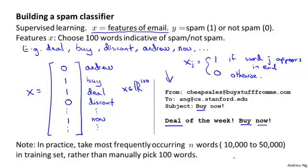By the way, even though I described this as manually picking a hundred words, in practice what's most commonly done is to look through the training set and pick the most frequently occurring n words, where n is usually between 10,000 and 50,000, and use those as your features. So rather than manually picking a hundred words, you look through the training examples and pick the most frequently occurring 10,000 to 50,000 words, and those form the features you use to represent your email for spam classification.